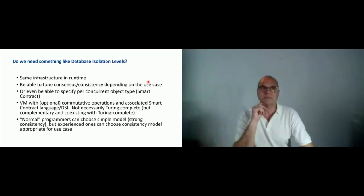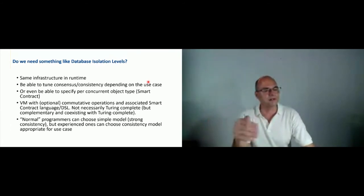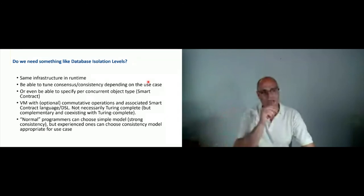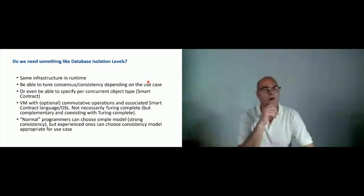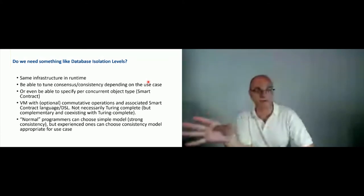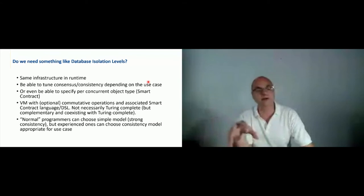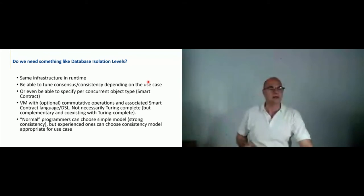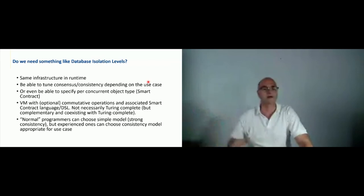The question is: do we need something in the blockchain like database isolation levels and different consistency models? We would like something like the internet of value — a blockchain infrastructure like the internet — but we would like to tune consensus and consistency depending on the use case. Some use cases may need eventually consistent systems, others strongly consistent systems, or even specify per concurrent object type. For smart contracts we may even need a virtual machine with optional commutativity of operations and an associated smart contract language or domain specific language, which in most cases we don't really need to be Turing complete.